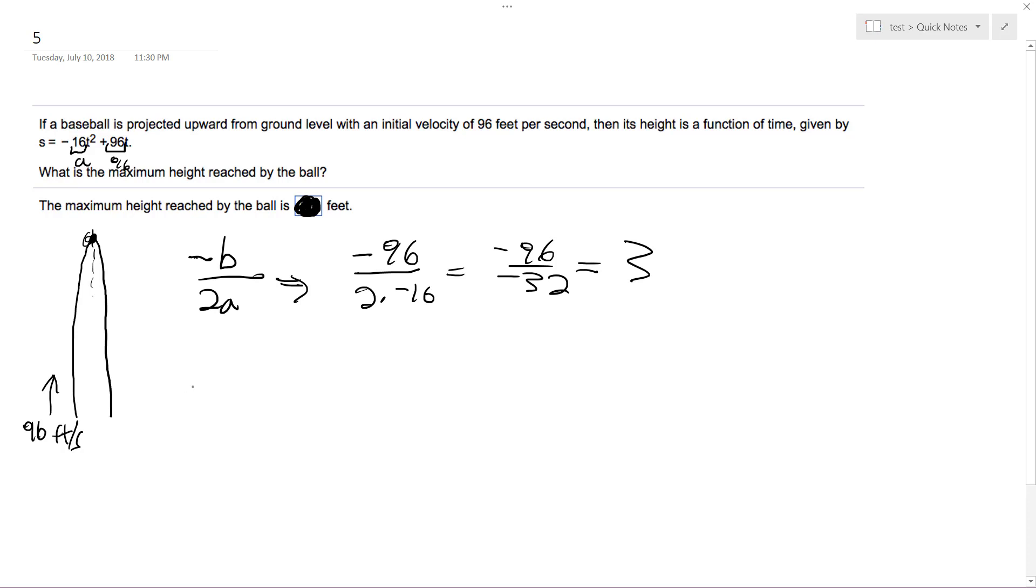Plugging this back into the equation, s(3) = -16 times 3 squared plus 96 times 3. So -16 times 9, I get -144, plus 96 times 3 which equals 288.